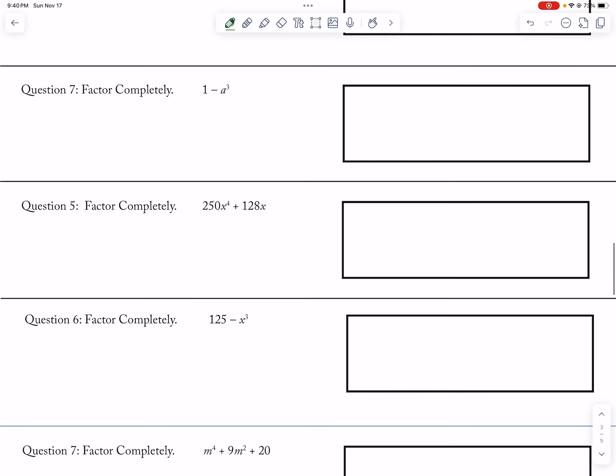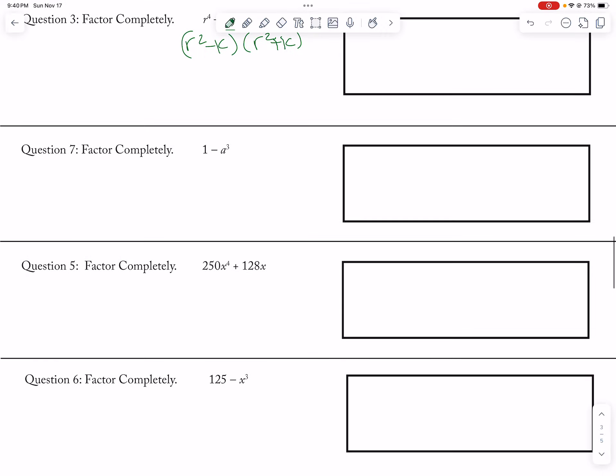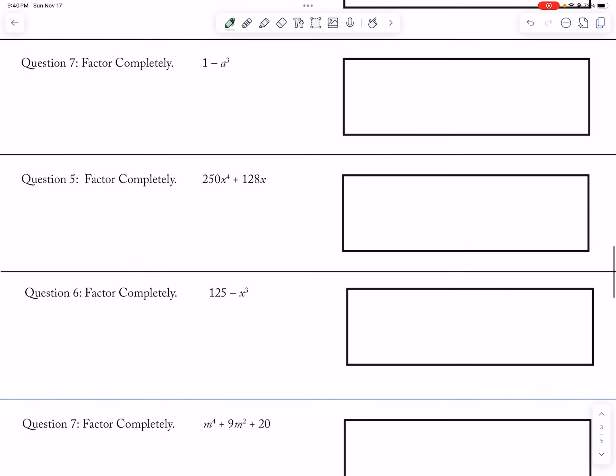And then what? Jump to 7, that should be 4.